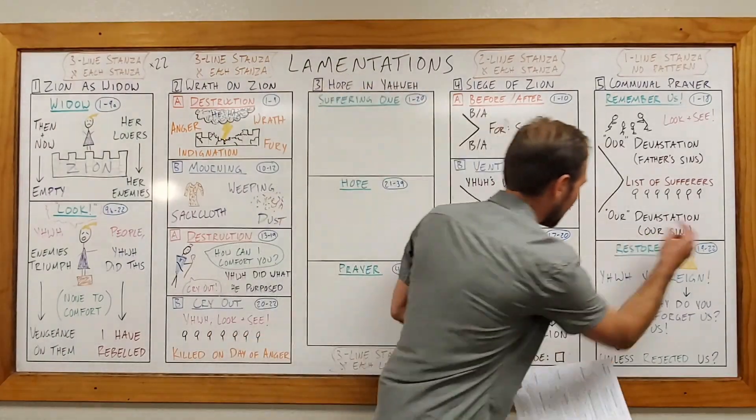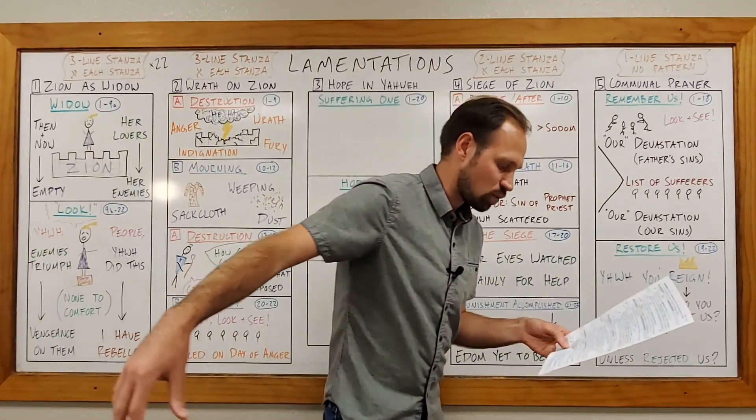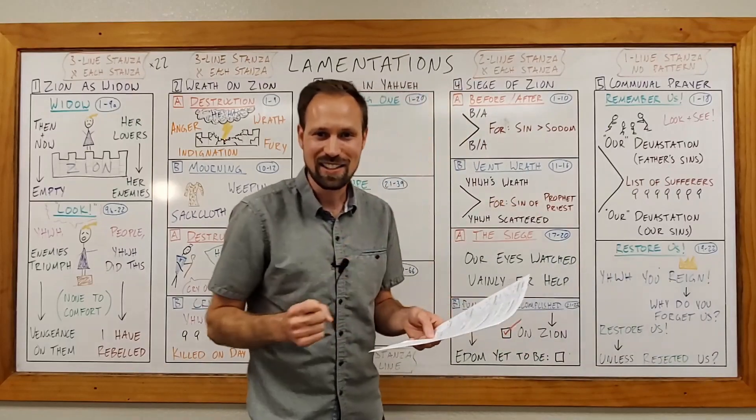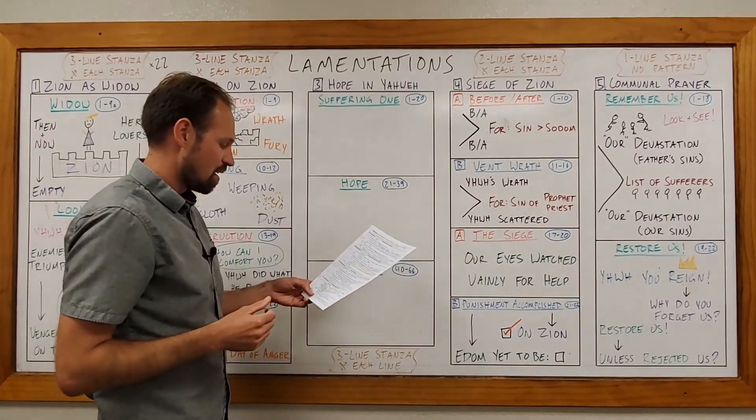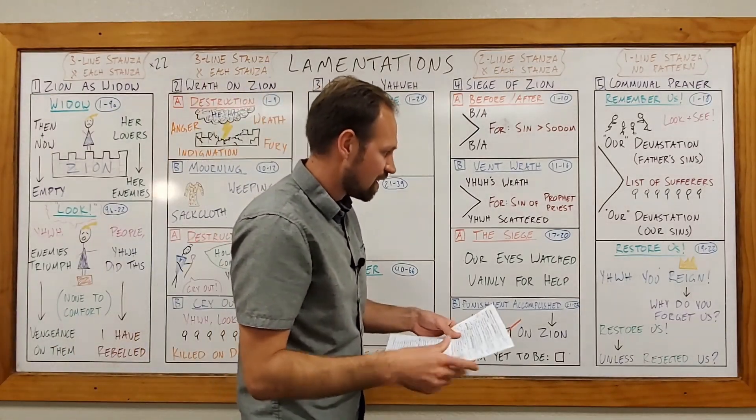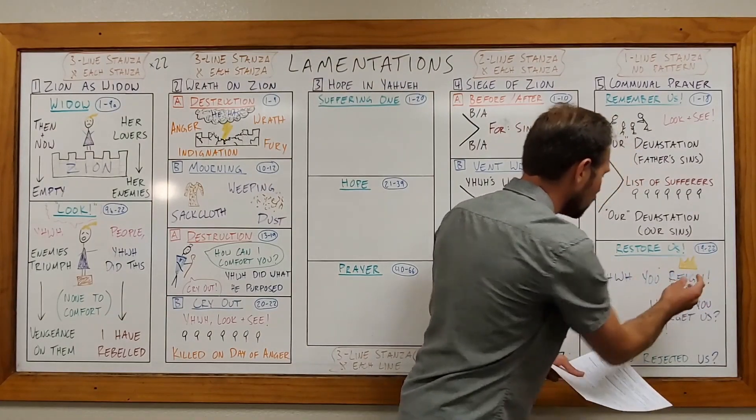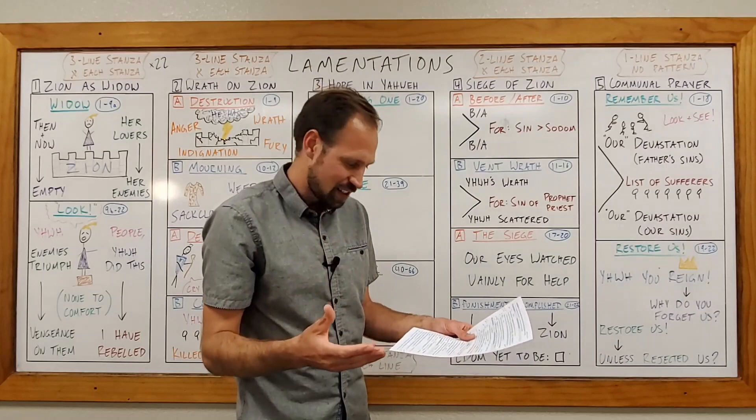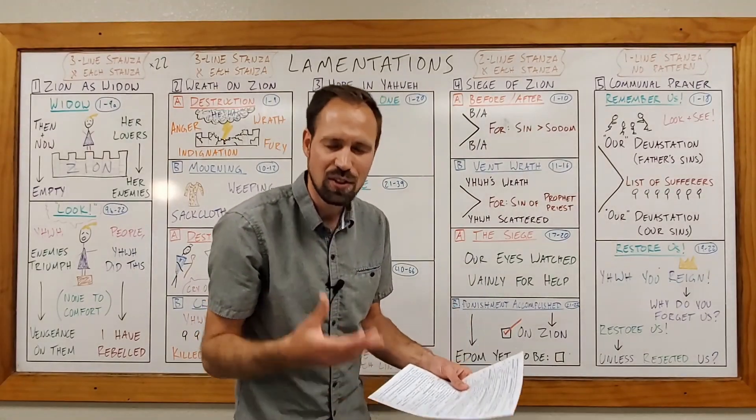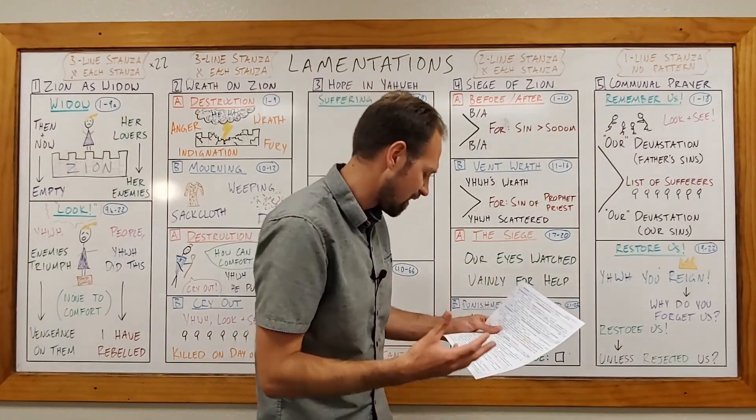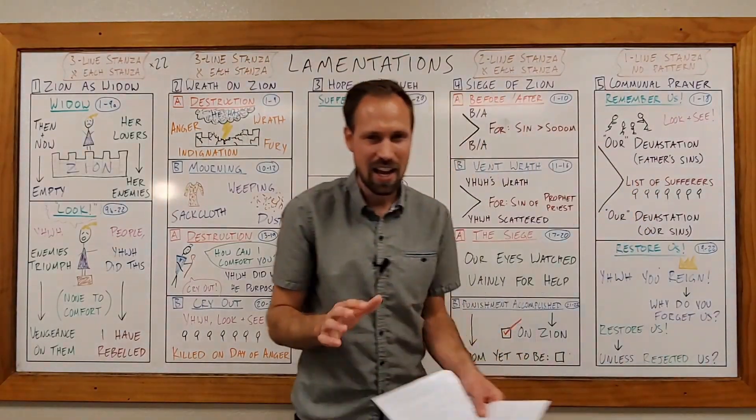And now, you may wish that in these final verses, 19 to 22, of the book of Lamentations, you may wish that the poet would wrap all this weeping and suffering together in a nice little bow and tell you what it all means and that it's all going to be over soon. But that's just not this book's M.O. Instead, what we have is this declaration, this positive declaration by the people, Yahweh, you reign forever. Your throne endures to all generations. But then they ask this question. They ask, why do you forget us forever and forsake us for so many days? And they call on Yahweh. They say, restore us to yourself, O God.